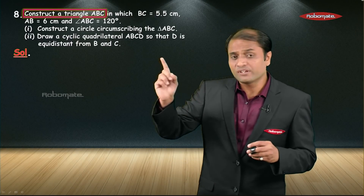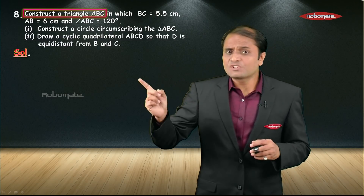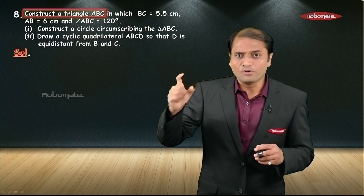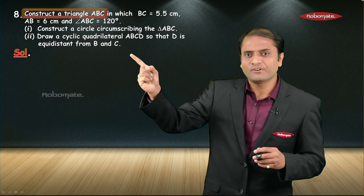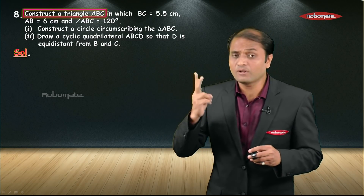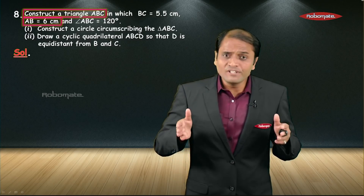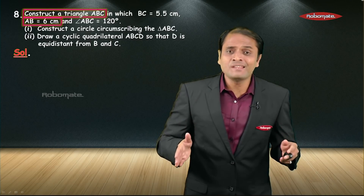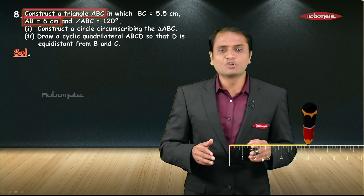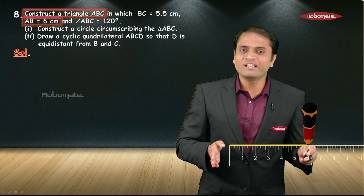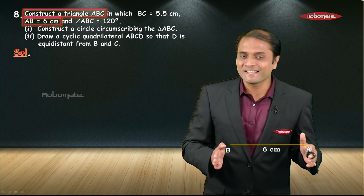Let's begin the construction. First and foremost, we are going to construct triangle ABC. In this triangle, two sides are known: BC = 5.5 centimeter and AB = 6 centimeter. Out of these two, AB is the bigger side, so we will choose AB as the base. We will draw a segment AB whose length is equal to 6 centimeter.